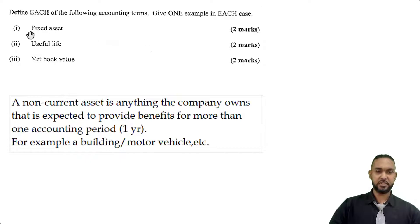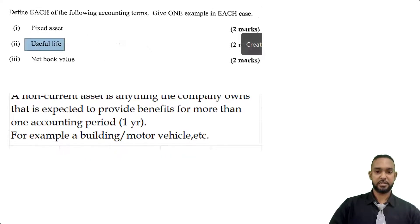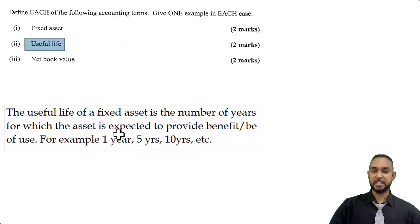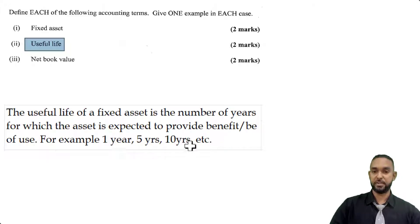The next thing they're asking us to define is useful life. The useful life of an asset is the number of years for which the asset is expected to provide benefit or be of use. For example, one year, five years, ten years, etc.